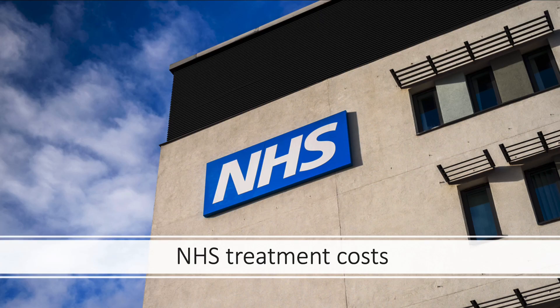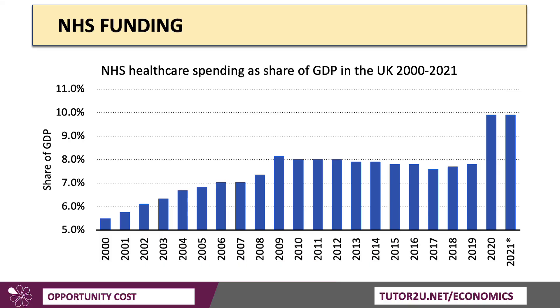The NHS is a really good example of where opportunity cost comes into play. Here's the total healthcare spending in the UK as a share of GDP from 2000 through to 2021. There was a huge surge in 2020 and again in 2021 as a result of the COVID pandemic, with NHS spending going up from about 8% of GDP to just under 10% of GDP in those last two years.